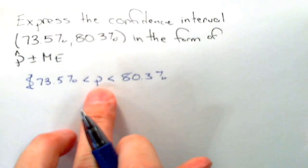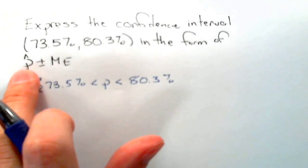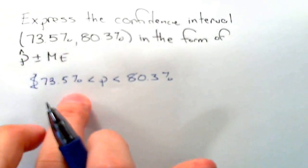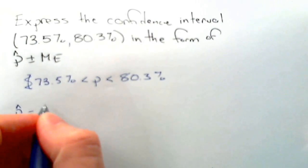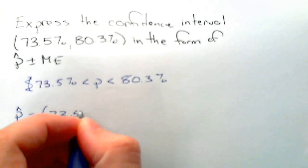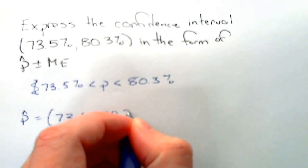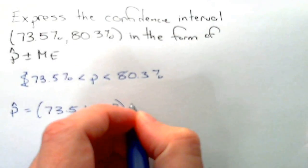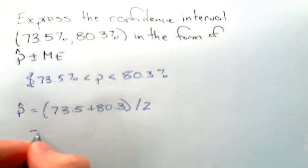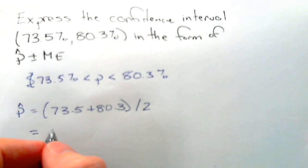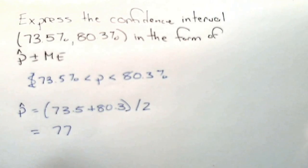To find the middle value, which is p-hat, it's going to be the average of the two. So p-hat equals (73.5 + 80.3) divided by 2. Typing that into the calculator, we get 77. So that's our p-hat.